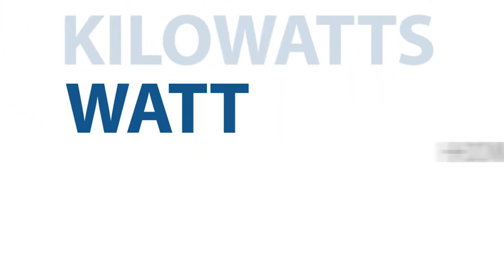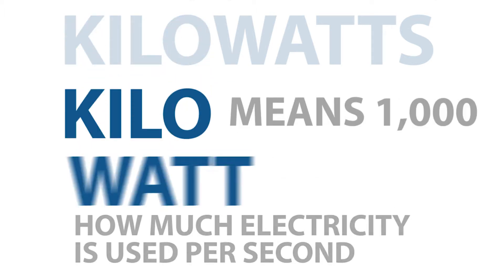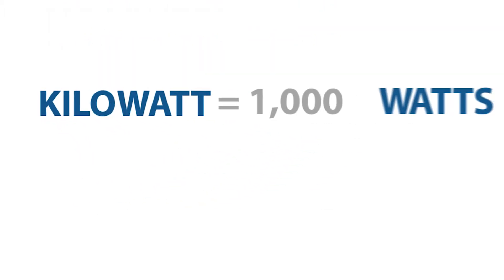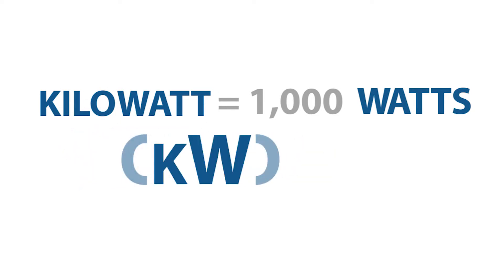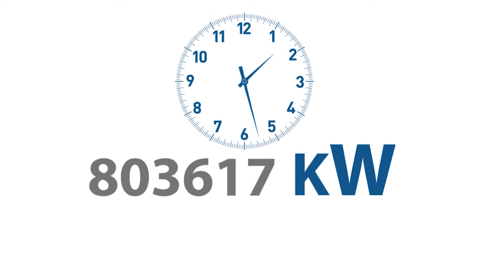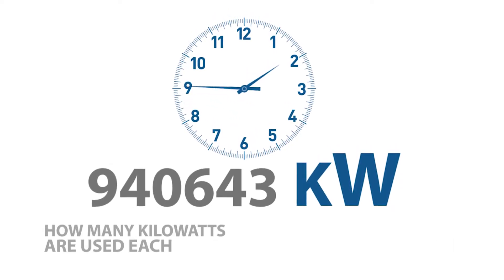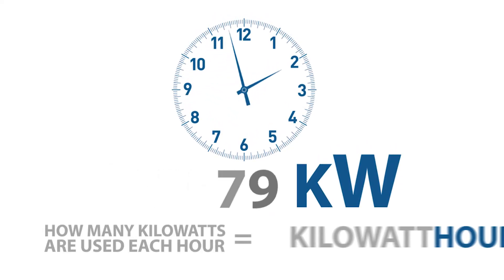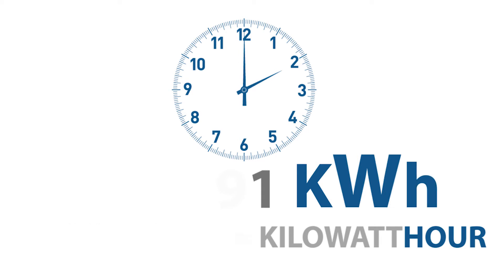The amount of electricity being used is measured in kilowatts. A watt is a measurement that describes how much electricity is used per second. Kilo means a thousand, so one kilowatt equals one thousand watts, abbreviated as KW. To make things easier to manage, energy companies measure how many kilowatts are used each hour — this is called a kilowatt hour, abbreviated as KWH.